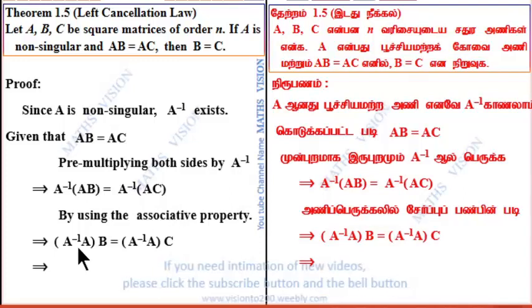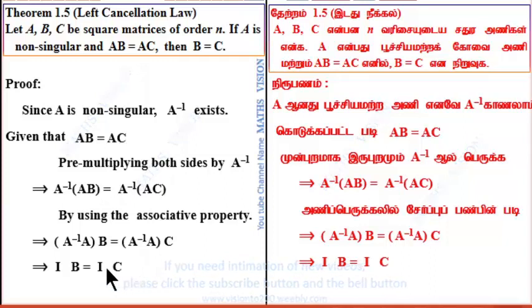Now, A inverse into A equals I, the identity matrix. So I into B equals I into C. Therefore, B equals C.